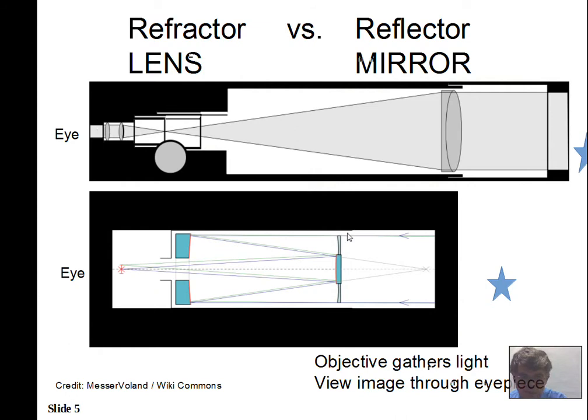The reflecting telescope uses a mirror instead. Light comes in and hits a main mirror. In the Schmidt-Cassegrain design, light is gathered by the main mirror, reflected to a secondary mirror, and then back through a hole in the main mirror to an eyepiece at the rear.